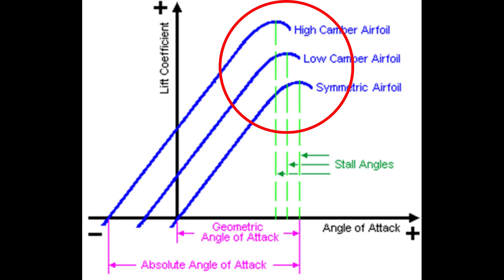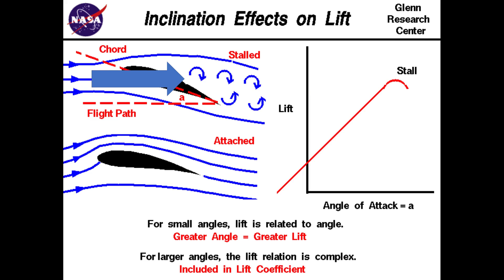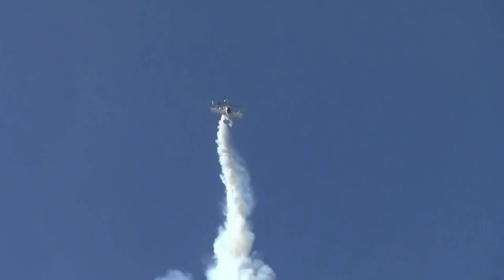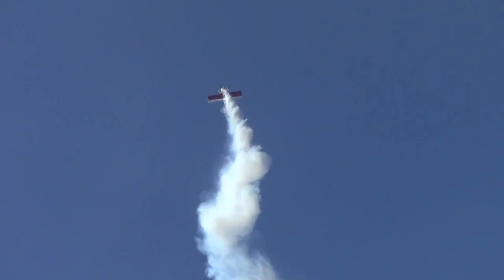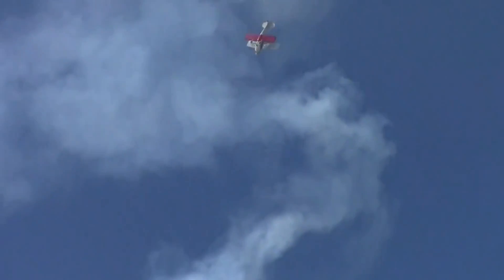Looking back at these coefficient of lift plots we can also identify another important characteristic of airfoils. In all of these plots there's a point at which the lift drops off significantly. As the angle of attack increases, less and less air remains attached to the top surface of the wing, and when this critical angle is reached the air on the top surface becomes so turbulent that it can no longer generate enough lift to maintain steady level flight. This leads to what's known as a stall, and the airplane can literally fall out of the sky. The only way to recover from a stall is to increase airflow over the top surface of the wing again, normally by pitching the aircraft down and increasing airspeed.